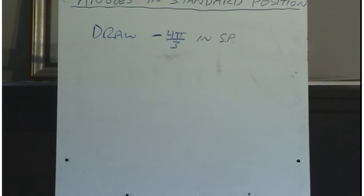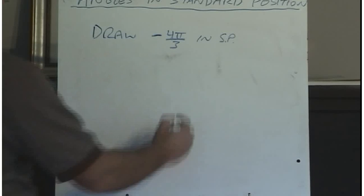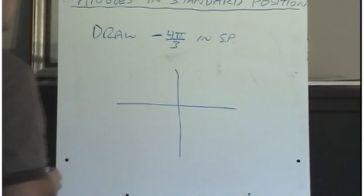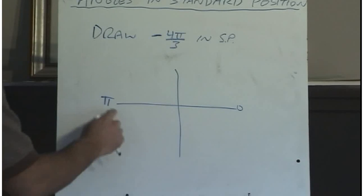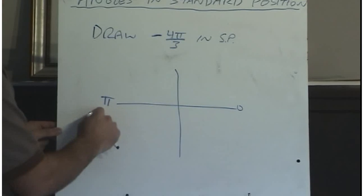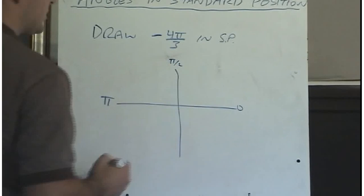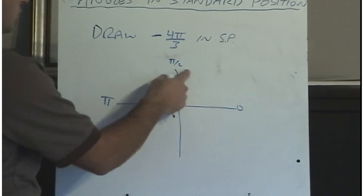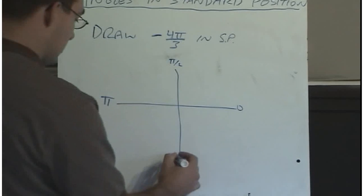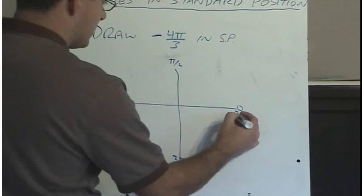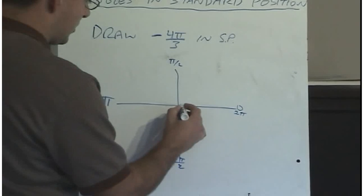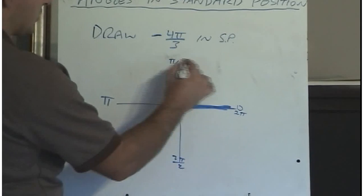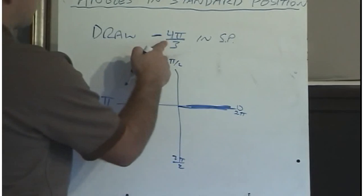Let's do one more example in radians: draw negative 4 pi over 3 in standard position. We're working in radians, so recall that 180 degrees is pi radians. So this is 0, this is pi radians, and half of that is pi over 2. If this is pi over 2 and 2 pi over 2, then this must be 3 pi over 2. One complete circle is 2 pi radians. This angle is negative, so I start at the initial arm and go clockwise. The angle is 4 pi over 3.